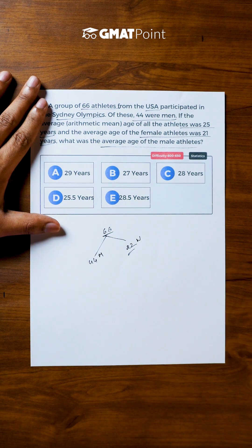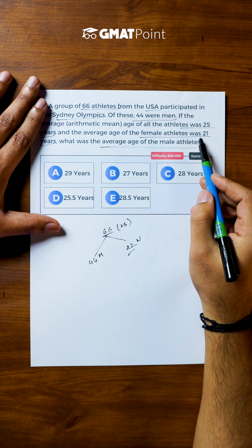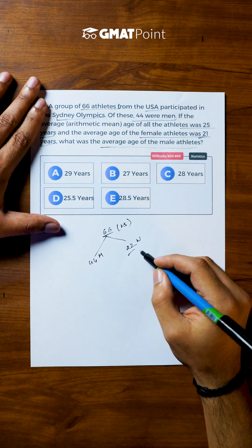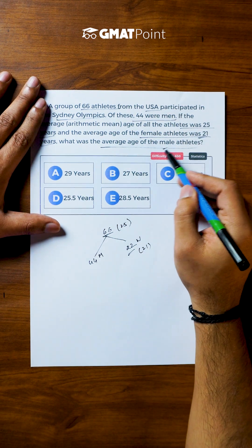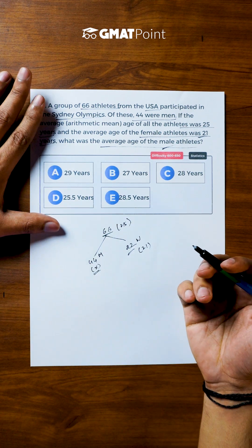Now the average age of all the athletes was given to be 25 years and the average age of the female athletes is given to be 21 years, and we are asked to calculate the average age of male athletes. Let us assume the value to be x.